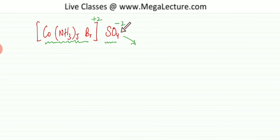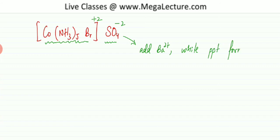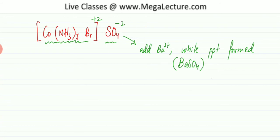Basically, you are testing for SO4. The test for sulfate is that you add barium ions, and when you add barium ions a white precipitate of BaSO4 is formed. Sulfate ions are not directly bonded to cobalt, so they dissociate and a white precipitate of barium sulfate is formed.